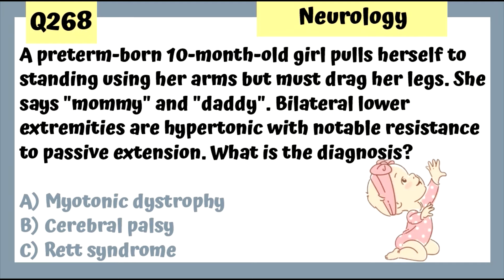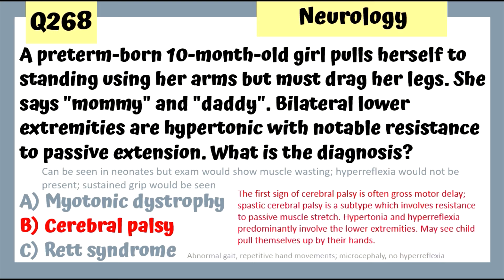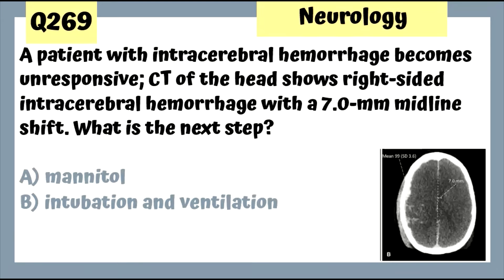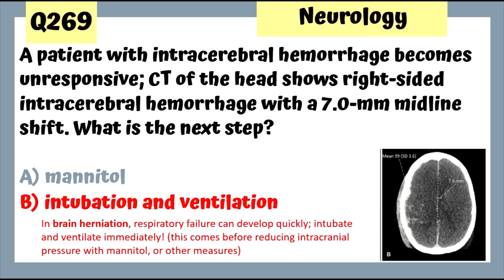Question 268: A preterm-born 10-month-old girl pulls herself to standing using her arms but must drag her legs; she says Mommy and Daddy; bilateral lower extremities are hypertonic with notable resistance to passive extension — this is cerebral palsy. The first sign is often gross motor delay. Question 269: A patient with intracerebral hemorrhage becomes unresponsive; CT shows right-sided hemorrhage with a 7-mm midline shift. The next step is intubation and ventilation, which comes even before mannitol.